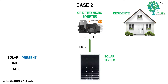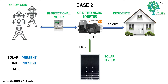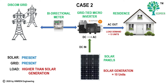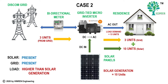In Case 2, the load demand is higher than the solar generation. Solar is generating 10 units of energy, however the load is 13 units. In this case, 10 units come from the solar panels and the remaining 3 units come from the DISCOM grid. The total demand of 13 units is met by a combination of 10 units from solar and 3 units from the power utility grid. So in this scenario, there is an import of energy from the DISCOM grid and no export.